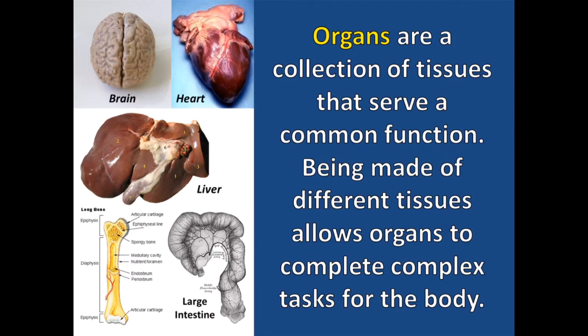Organs are a collection of tissues that serve a common function. Being made of different tissues allows organs to complete complex tasks for the body. The brain, heart, liver, bones, and intestines are all examples of organs that are found at this level.